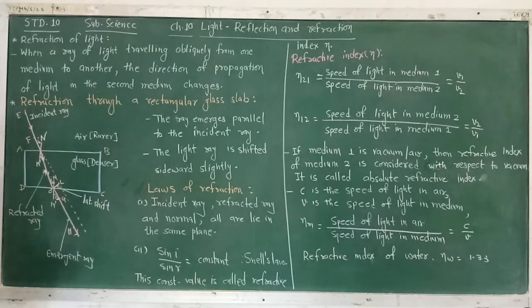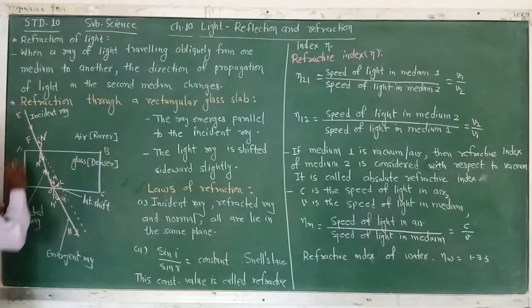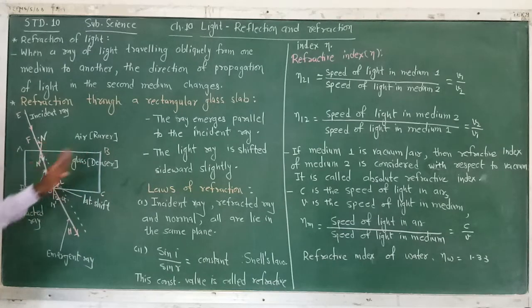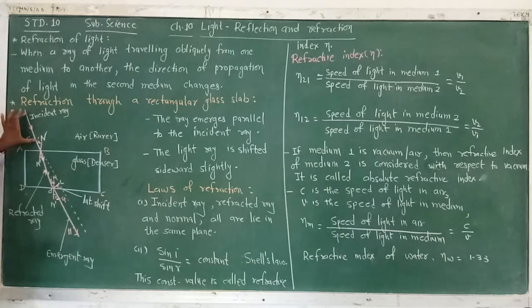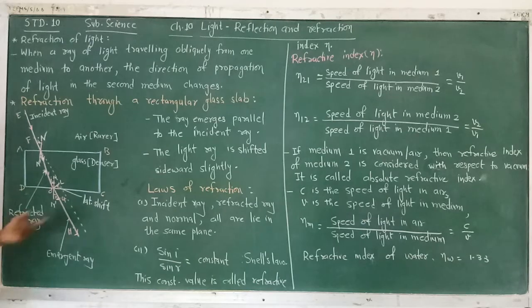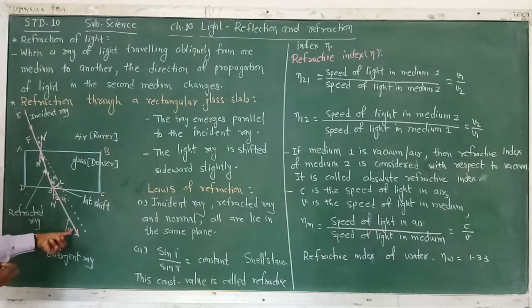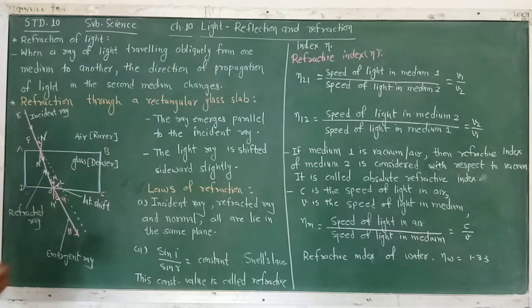For the refraction activity with a rectangular glass slab, take a white cardboard paper and place the glass slab on it. Mark the four corners A, E, C, D with a pencil. Now take two pins E and F and fix them on one side in the air medium. On the opposite side, that is the CD side, observe pins E and F and fix two more pins G and H on the other side in the air medium.